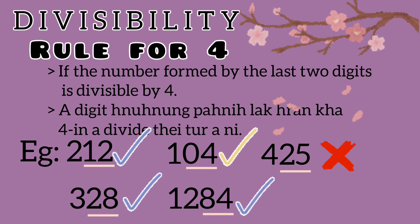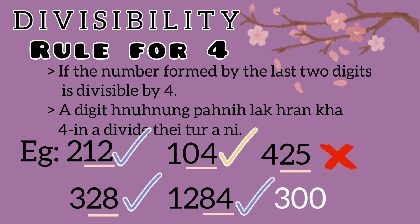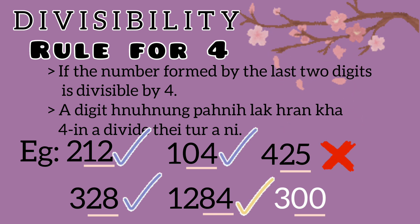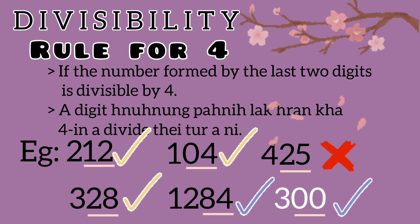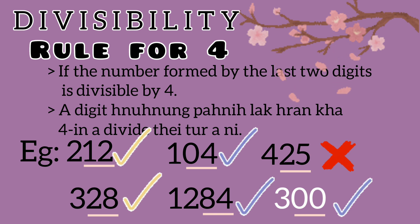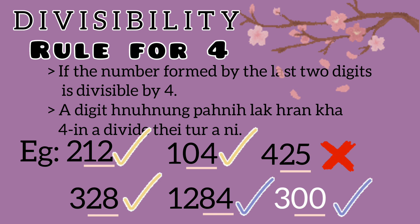Special case: 300. The last 2 digits are 0 and 0 — that is 00. Is 00 divisible by 4? Yes, since 0 divided by anything is 0. So 300 is divisible by 4. When the last 2 digits are both 0, the number is divisible by 4.